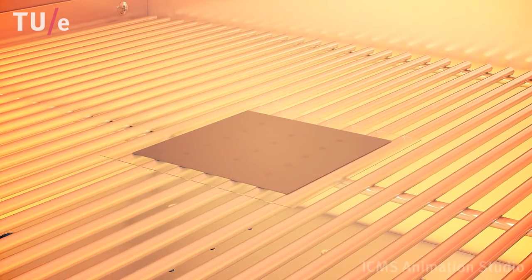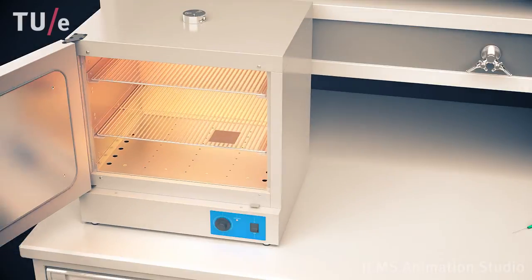The substrate is placed in an oven to cure the polymer so it becomes elastic.